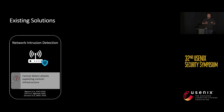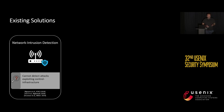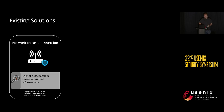Let's now look at existing solutions to protect IoT devices. First, there are solutions that look at the network traffic. However, as we have just seen, these solutions cannot detect contextual attacks because the network traffic is indistinguishable.